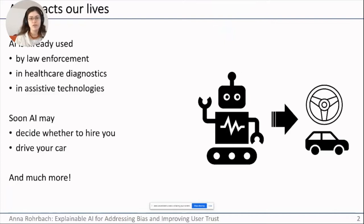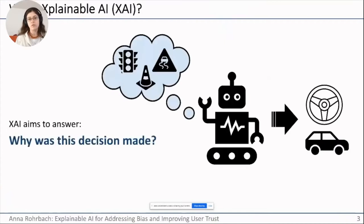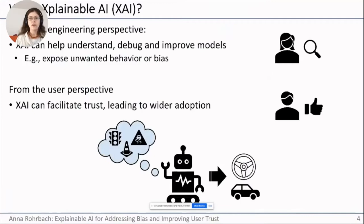AI now affects areas from law enforcement to healthcare, and soon it may drive your car or decide whether to hire you for your next job. When you place so much trust and so many decisions in the hands of AI, it's only natural to ask why a certain decision was made — and this is where explainable AI, or XAI for short, comes in.